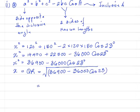So QR is equal to 61.4 kilometers. Part IA is asking us to calculate the distance QR, which is 61.3 kilometers.